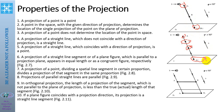When a line is perpendicular to the projection plane in orthogonal projection, its projection is a point. The projection of a straight line segment or plane figure, which is parallel to the projection plane, appears in equal lengths or as a congruent figure, respectively, depending on the type of projection.